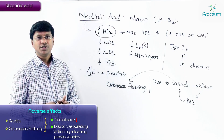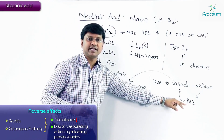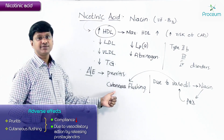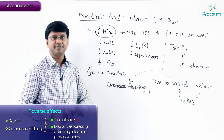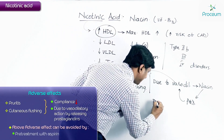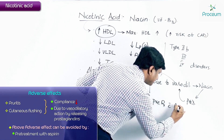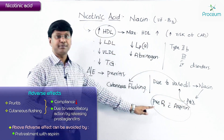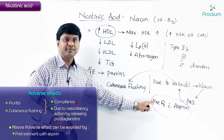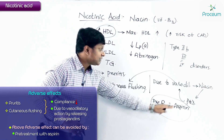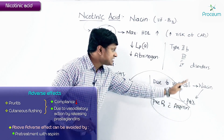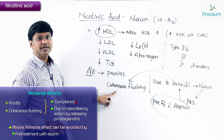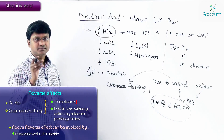If you can reduce the prostaglandins — if you can reduce the prostaglandin synthesis — then the cutaneous flushing can be prevented. To do this, you give a pre-treatment with aspirin. Aspirin reduces prostaglandin synthesis, which inhibits vasodilatation and thereby inhibits cutaneous flushing.